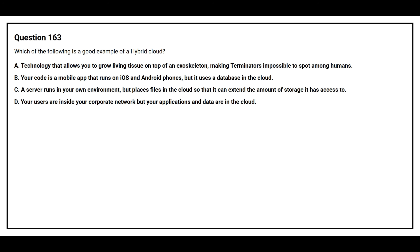Question number 163. Which of the following is a good example of a hybrid cloud? Option A: Technology that allows you to grow living tissue on top of an exoskeleton, making terminators impossible to spot among humans. Option B: Your code is a mobile app that runs on iOS and Android phones, but it uses a database in the cloud.